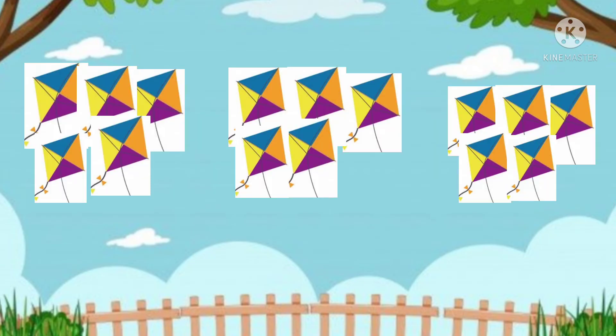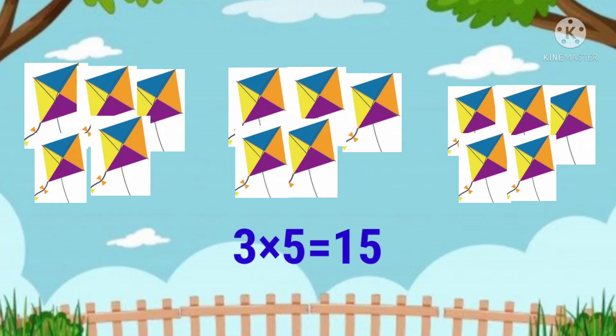Here we have three sets of five kites. How to write the multiplication fact? 3 multiplied by 5 is equal to 15.